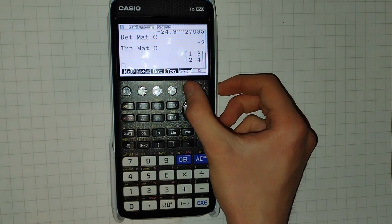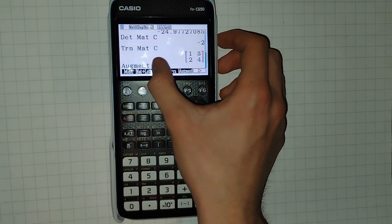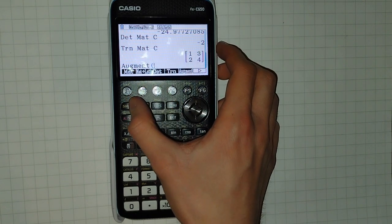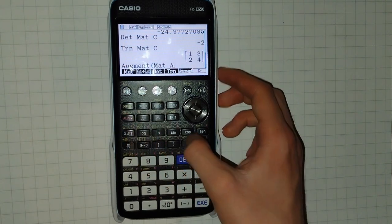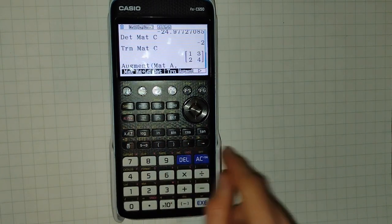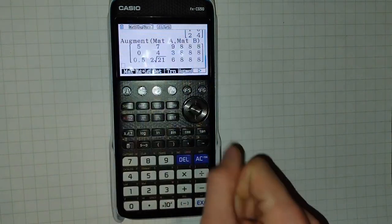And there are many other operations you can do. Some of them, like Augment, will take two parameters, two matrices. So here matrix A, comma, here, and matrix B. And it will augment them together.